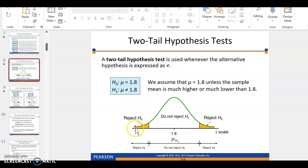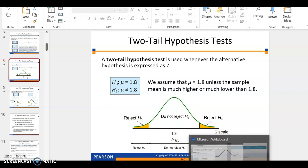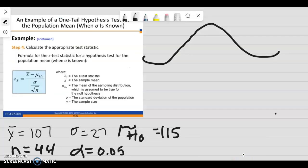So if you draw your curve, your rejection areas are going to be in your tails. And the way I always remember it is, the highlighted area is the rejection area. So here and here. If my test statistic falls in that area, I'm going to reject.